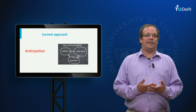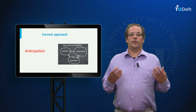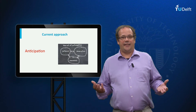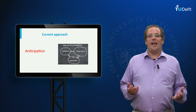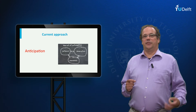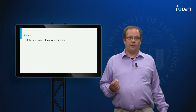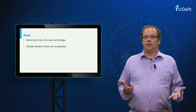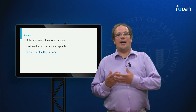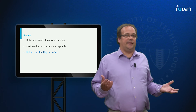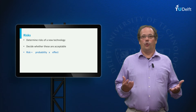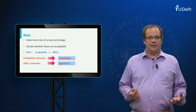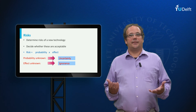As we have seen in the previous lecture, most current approaches to Collingridge's dilemma focus on anticipation — making technology more predictable. I will look at two ways of anticipation: the risk approach and the precautionary principle. The risk approach proceeds as follows: first determine the risk of a new technology, then decide whether that risk is acceptable. Risk is understood as probability times effect. However, in many cases we do not know probabilities — this results in what we call uncertainty. Sometimes we do not know all possible consequences, and this is called ignorance. As a consequence, we cannot determine risks.